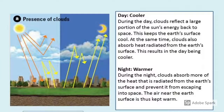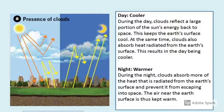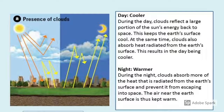As shown in the diagram, in the presence of clouds they reflect a portion of the Sun's energy back into space, so not all of the short wave radiation shines directly on the ground. This results in a slightly lower daytime temperature. During nighttime, clouds absorb more of the heat radiated from the surface and prevent it from escaping into space, which raises the nighttime temperature closer to the daytime temperature.